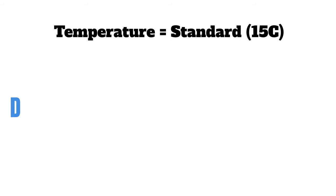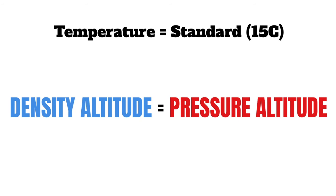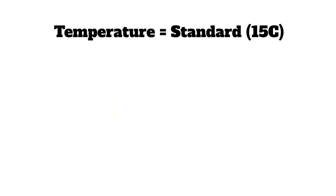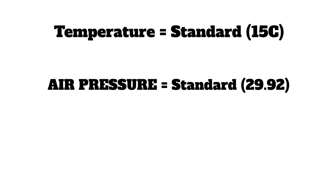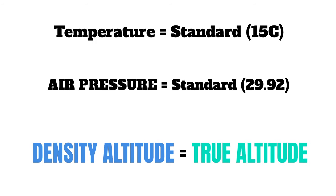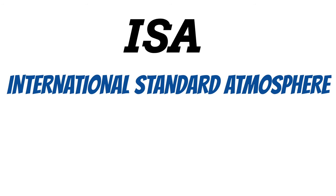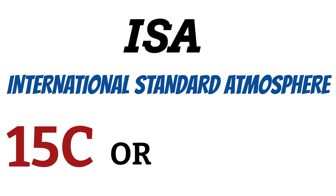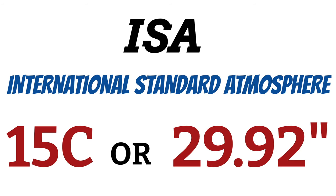But how do we calculate density altitude? We start with our pressure altitude — that's always the starting point. When the temperature is standard at 15 degrees Celsius, density altitude and pressure altitude are exactly the same. Which means if temperature and air pressure are both standard at 29.92 inches, density altitude and true altitude are the same as well. Sometimes you'll see the acronym ISA on your charts — that stands for International Standard Atmosphere, which is basically a fancy way of saying 15 degrees Celsius or a pressure setting of 29.92.